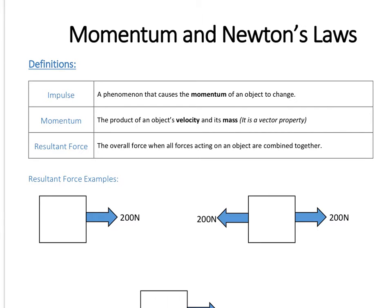The first definition is an impulse, and an impulse is just another way of saying a change in momentum of an object. Very often you'll get a question which says an object experiences an impulse of a number, and all that means is the momentum of that object has changed by that amount. It's just the change of momentum.